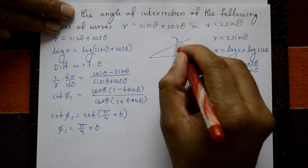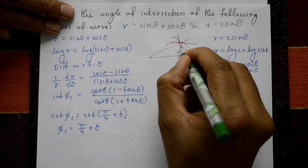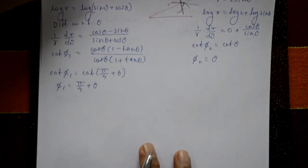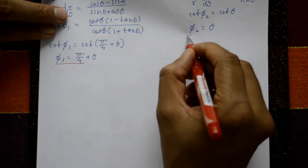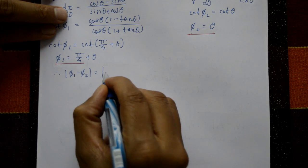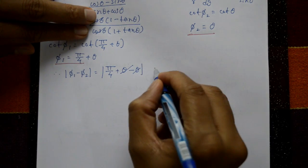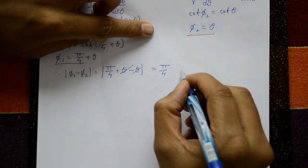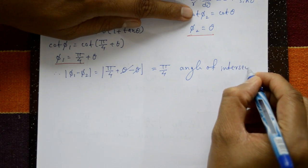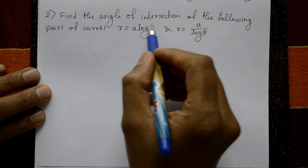The two curves intersect and we find the angle between the two tangents. φ₁ − φ₂ = (π/4 + θ) − θ, the θ cancels, giving the angle of intersection as π/4. This is the required answer.